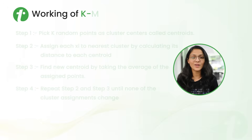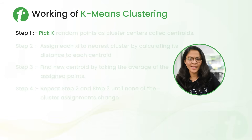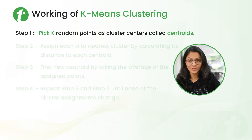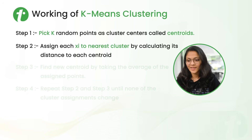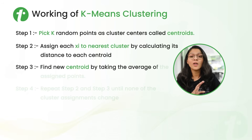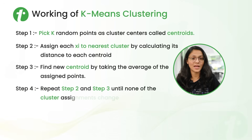Now let's talk about the working of K-means clustering. There are four steps. First, pick K random points as cluster centers called centroids. Second, assign each data point to the nearest cluster by calculating its distance to each centroid. Third, find a new centroid by taking the average of all assigned points. Fourth, repeat steps two and three until none of the cluster assignments change.